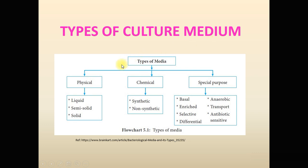There are different types of culture medium. These are classified on the basis of physical, chemical, and special purpose criteria. Physically, culture medium can be liquid, semi-solid, and solid. On the basis of chemical characteristics, they can be classified as synthetic and non-synthetic. The special purpose culture media include basal, enrichment, enriched, differential/indicator, and selective media. In this lecture we will cover liquid, semi-solid, solid, synthetic, non-synthetic, and most special purpose media except anaerobic and antibiotic sensitivity, which will be covered in later lectures.